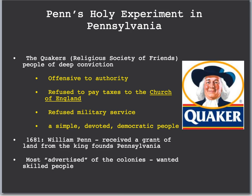The final middle colony we're going to focus on is Pennsylvania. The heading of this section is Penn's Holy Experiment in Pennsylvania. Here's the connection to Pennsylvania: the Quakers. The Quakers are a huge group of people you need to know in A-Push. They're also called the Religious Society of Friends. You definitely need to know the term Quakers and what their characteristics were.